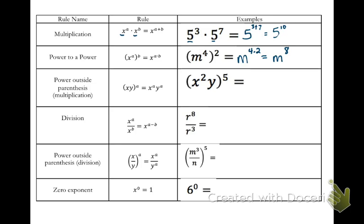Pause your video and copy down the next line. This is power outside of parentheses. We have parentheses with a power outside, and we're going to take that outside power and multiply it by each exponent on the inside. In the rule statement, each implicit power is 1. In our example with x squared and y — putting a 1 on y — we take 5 times each exponent and get x to the 10th and y to the 5th.